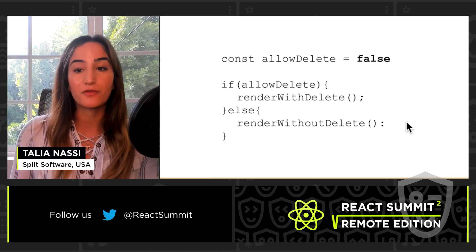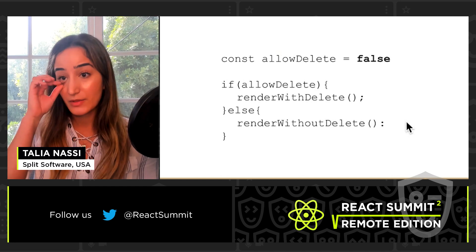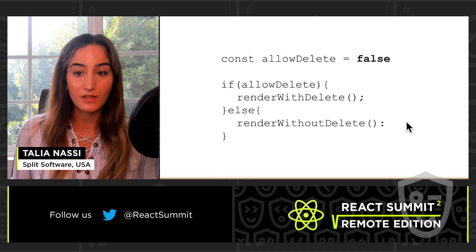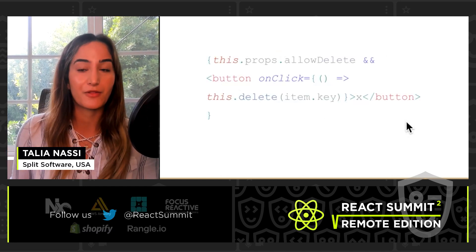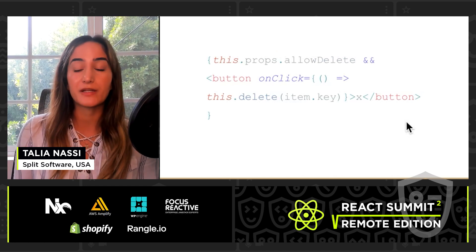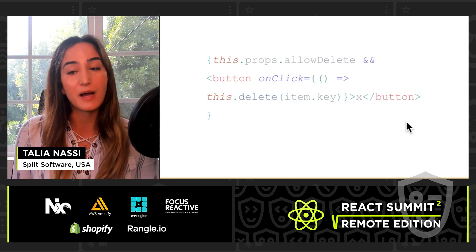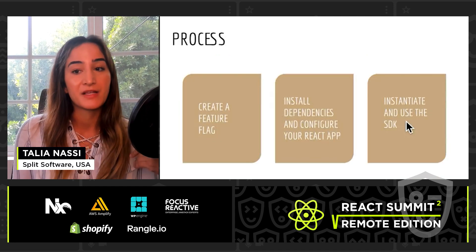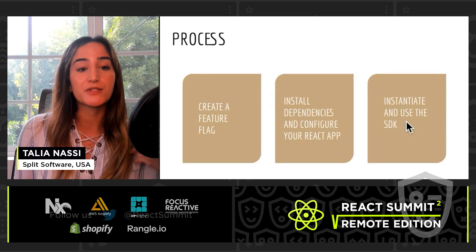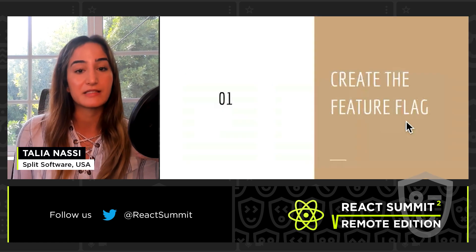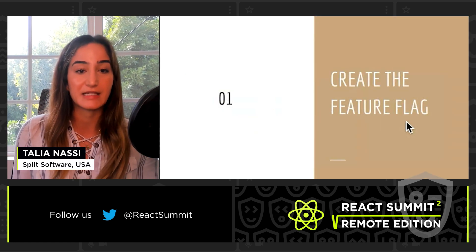What I had before was a really hacky way to do this because I'm just hard-coding whether or not the user can delete. This is actually the right way to do it in React, where depending on the value of the prop, you're either going to show the delete button or not. So what we're going to do today is create a feature flag, install the dependencies, and instantiate and use the SDK.